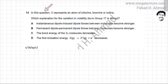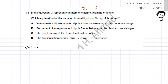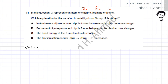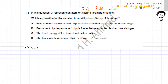The question states that X represents an atom of chlorine, bromine, or iodine — so we have three molecules: Cl₂, Br₂, and I₂. The question asks which explanation for the variation in volatility down Group 17 is correct. At room temperature, chlorine is a gas, bromine is a liquid, and iodine is a solid.